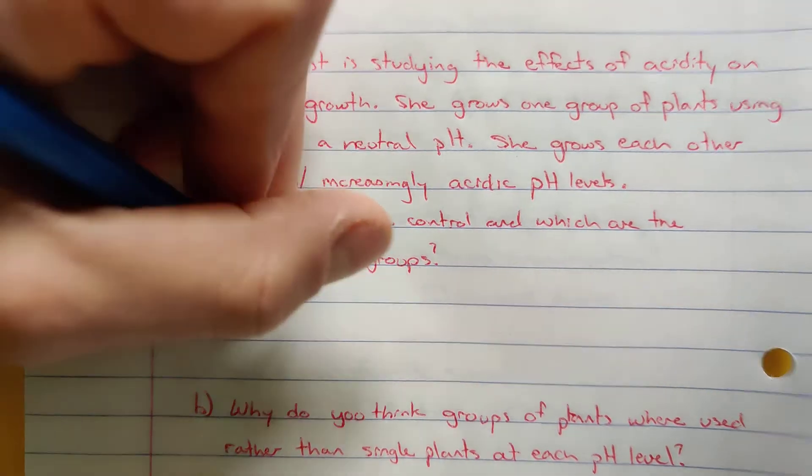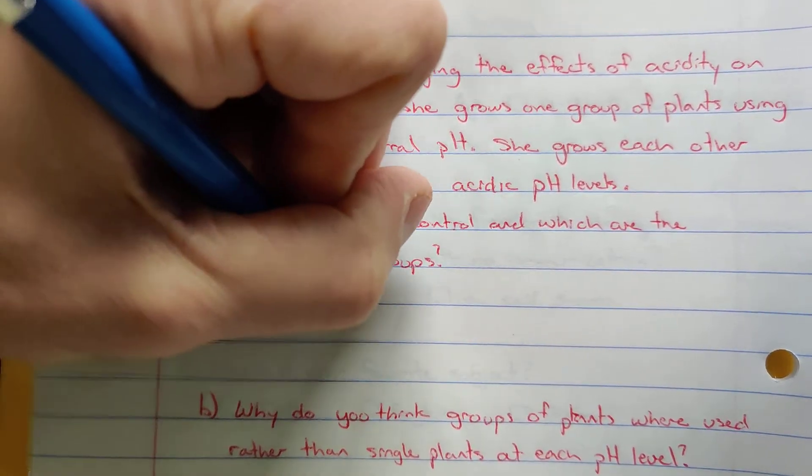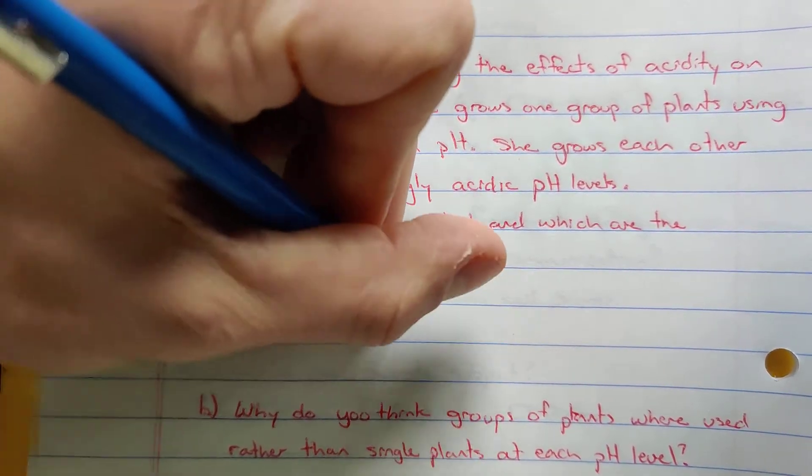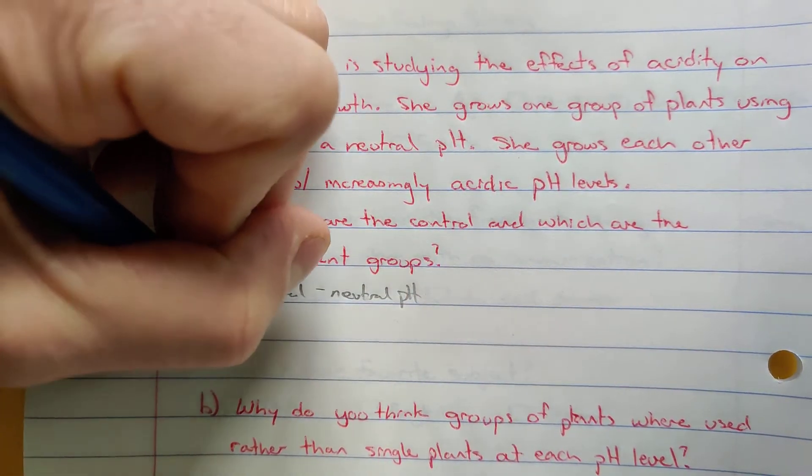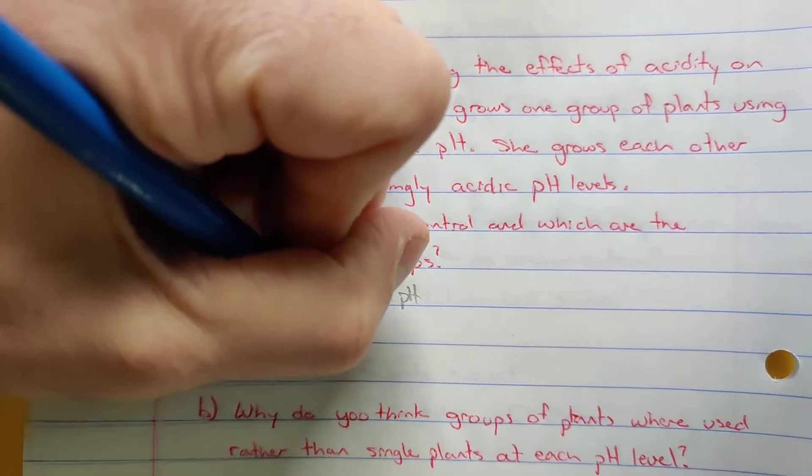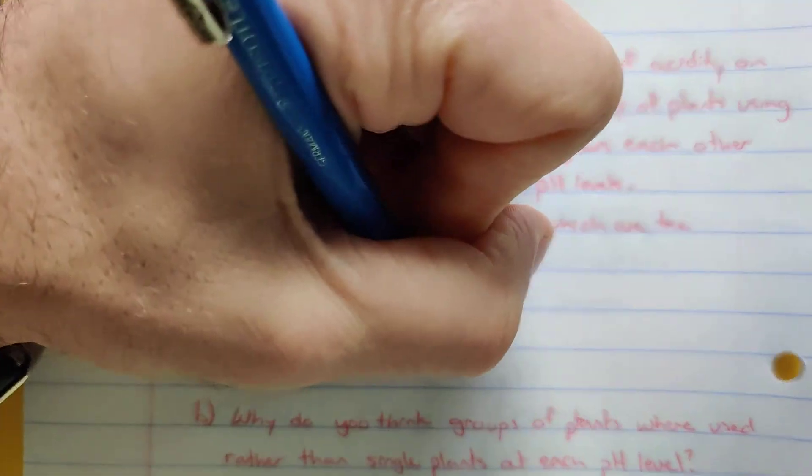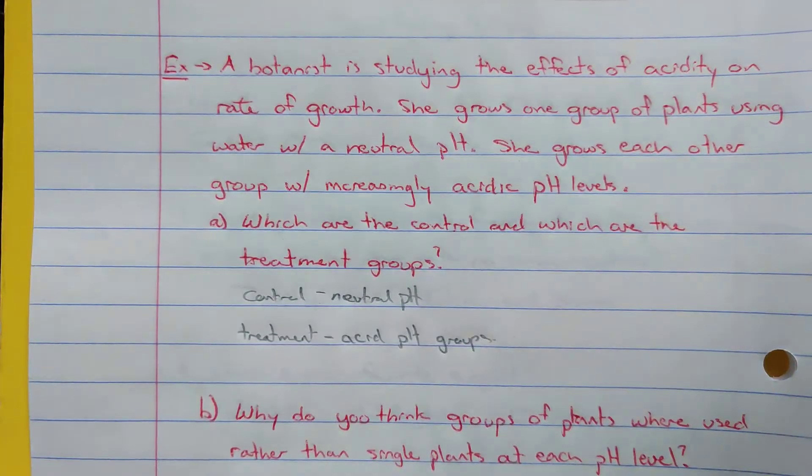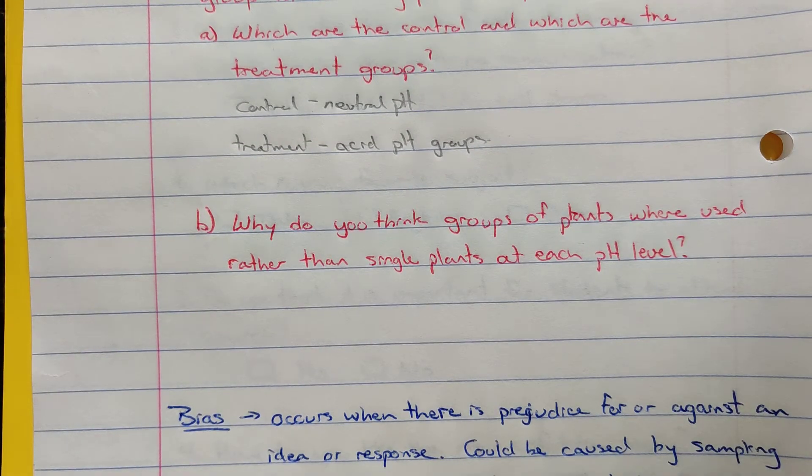So the control group would be the group with the neutral pH and then the treatment groups would be all the acidic pH groups.